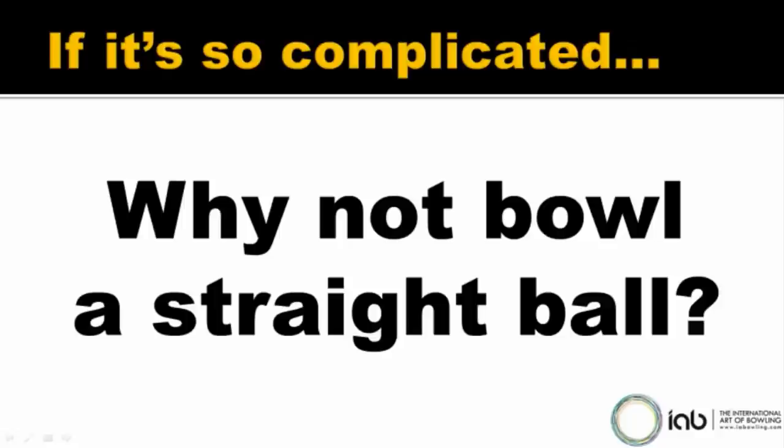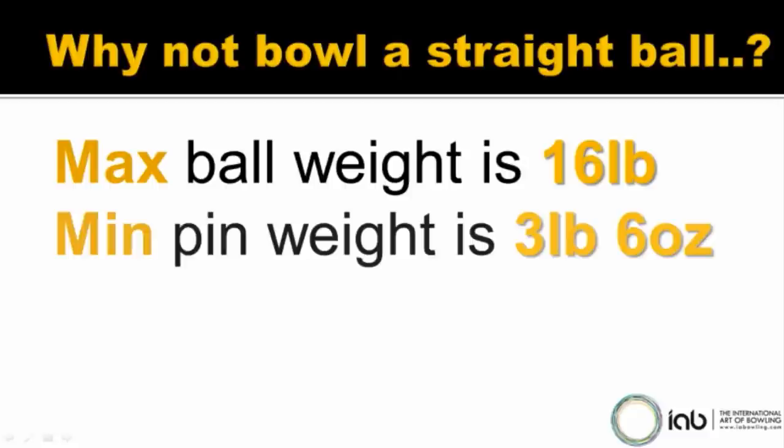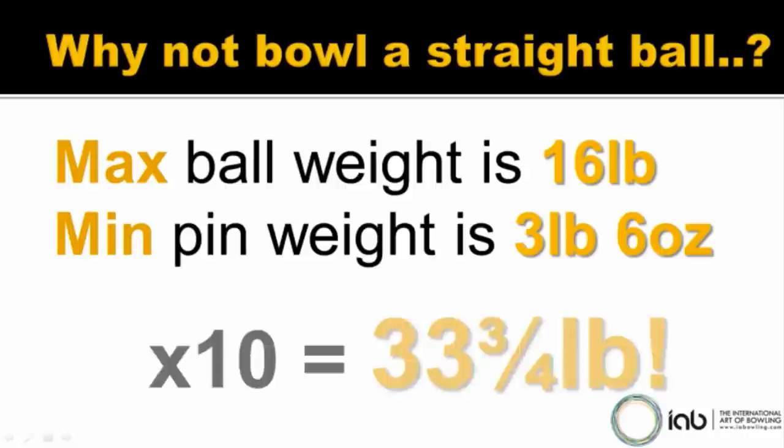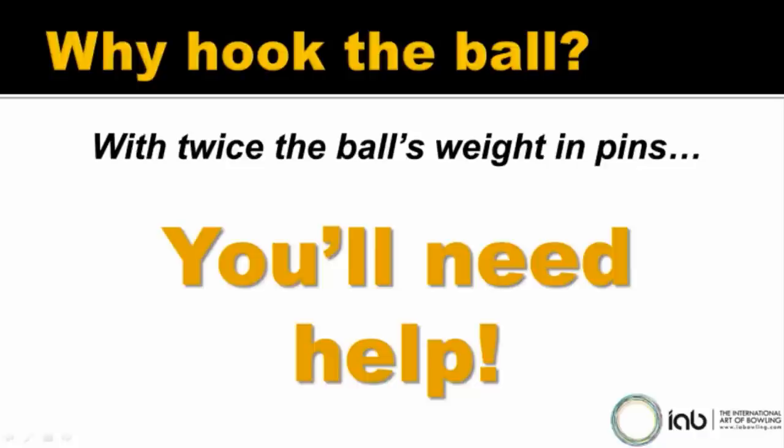So if it's so complicated, this is a very good question my dad asks me all the time: why not just bowl a straight ball? When you think about it and go to first principles, it's a good question. The answer, as I tell my dad regularly, is that the maximum weight of a ball is 16 pounds, and the minimum weight of a pin is 3 pounds 6 ounces. So if you're trying to knock down 10 pins, the minimum you're facing is 33 and three-quarter pounds. With more than twice your weight in bowling balls in pins, you're going to need help.